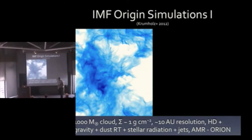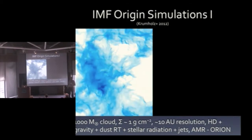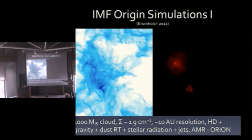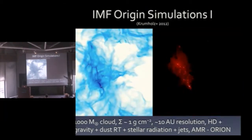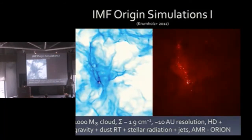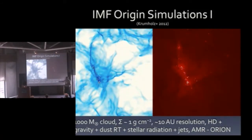Here's a simulation that includes some radiation — one of mine. It uses hydrodynamics, gravity, radiative transfer for the dust, stellar radiation feedback, and protostellar jets. This is an AMR simulation done with the Orion code. The left shows gas column density distribution, the right shows projected temperature, and white dots are individual stars. We have 10 AU resolution, so we're resolving individual stars here, though not the tightest binaries. This box is about a parsec in size.